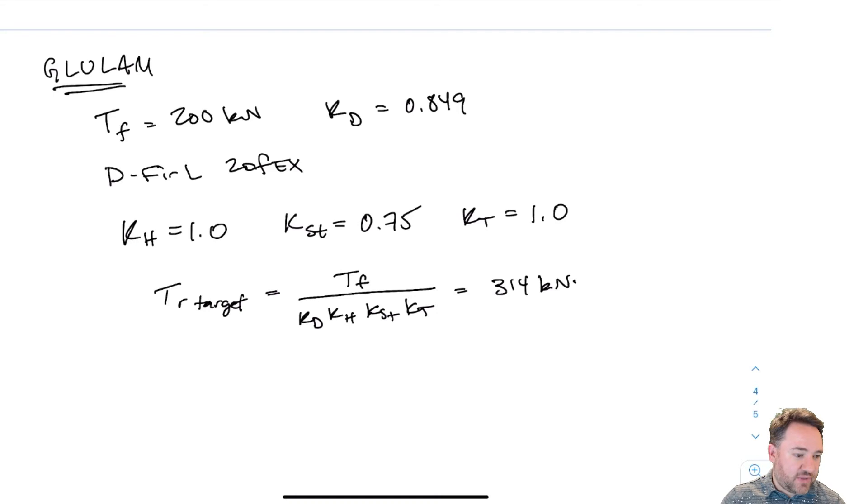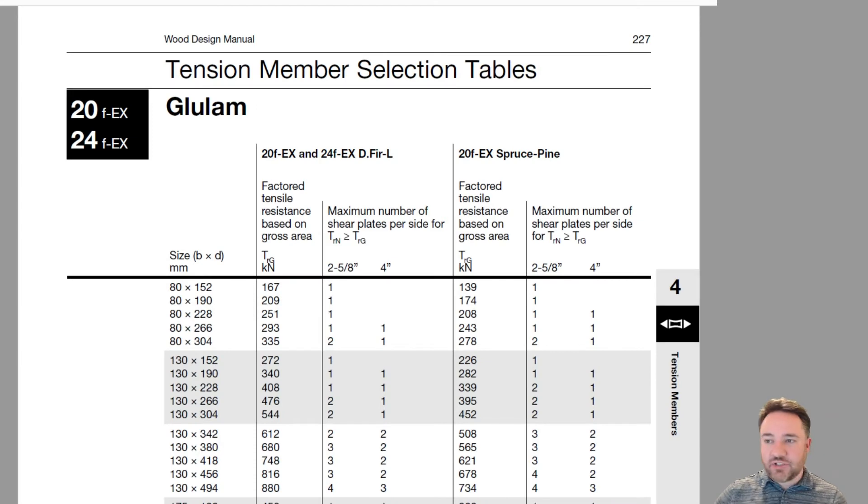If I was doing something with net area, then I would also divide by how much my net area is reduced compared to my gross area, but as I said, we're going to look at only gross value properties for the table. Our target force here is 314 kilonewtons.